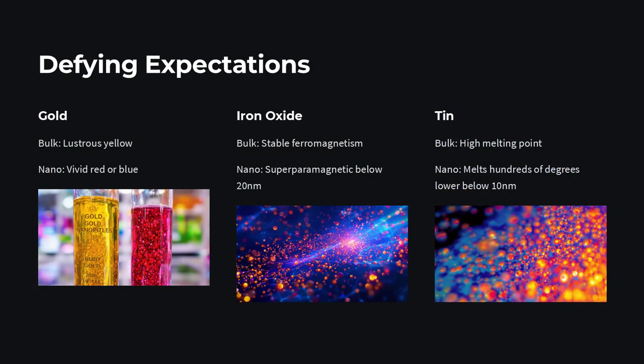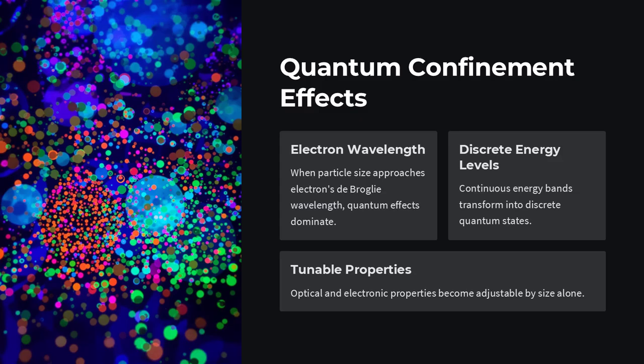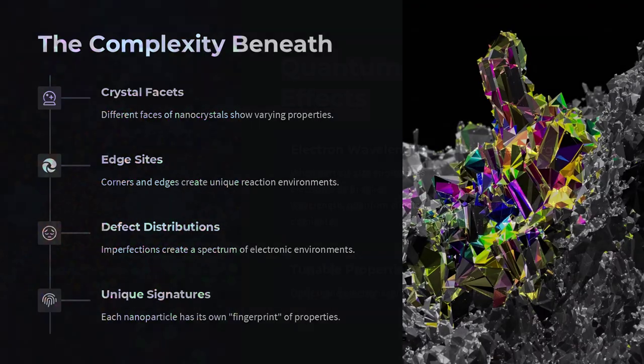In the macroscopic world, materials have predictable properties. Gold is yellow and shiny, graphite conducts electricity, and ceramics are brittle. But shrink these down to just a few nanometers and suddenly color, conductivity, strength, melting point, and reactivity can all radically change.